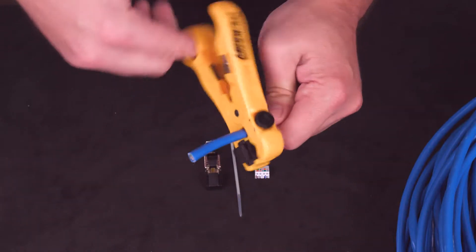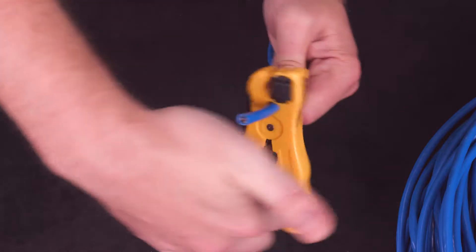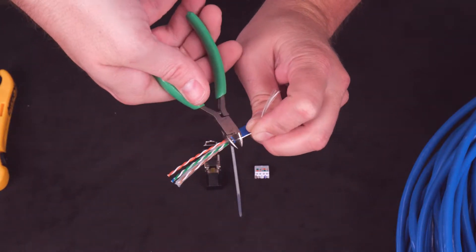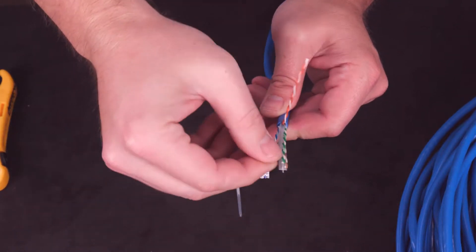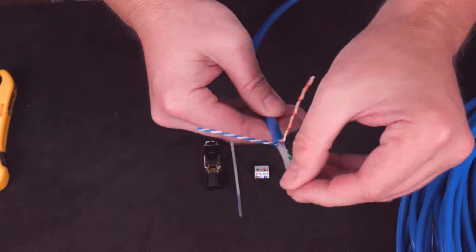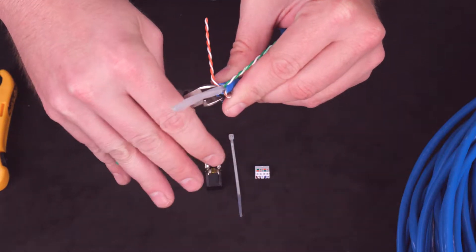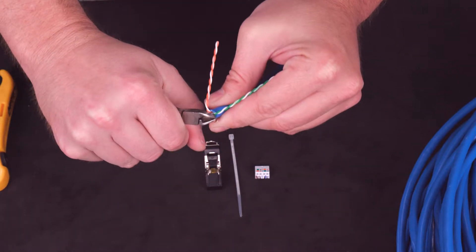Start by stripping the outer jacket off of your CAT 6A cable. Now, trim back the little nylon pull string. Fold back each of the four color pairs. Cut the spline off flush with the four color pairs, so it's not sticking out of the jacket.